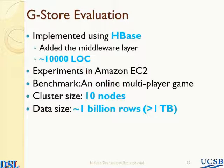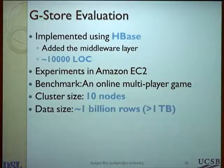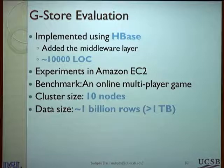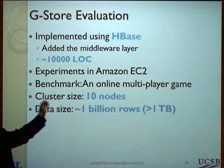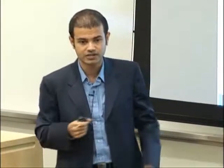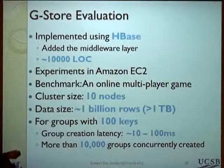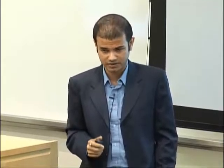How did we do in terms of performance? Our evaluation was done using this prototype implementation, which is about 10,000 lines of code added in the middleware layer. I experimented using Amazon EC2 to do some scale-out experiments. I did an online multiplayer game benchmark, and on a modest cluster of 10 nodes, we were able to serve about a billion rows, which is about a terabyte of data. With groups of size 100 keys, the group creation latency was somewhere between 10 to 100 milliseconds, depending on how you select the groups. In this cluster of 10 nodes, you are able to serve about 10,000 groups being concurrently served.